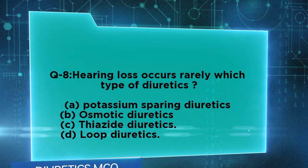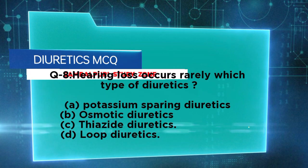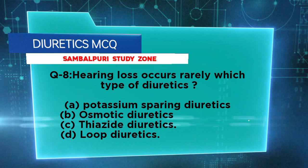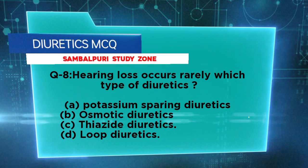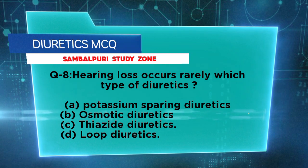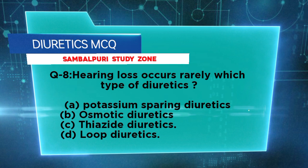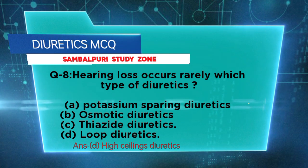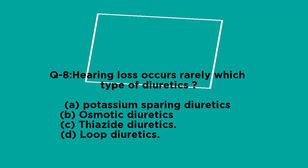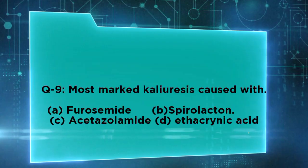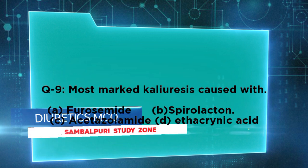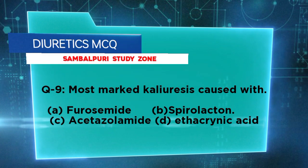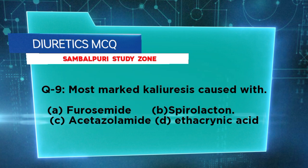Hearing loss occurs rarely with which type of diuretics? Options: potassium-sparing diuretics, osmotic diuretics, thiazide diuretics, loop diuretics. Right answer: high-ceiling (loop) diuretics. Next: most marked calciuresis is caused by furosemide, spironolactone...